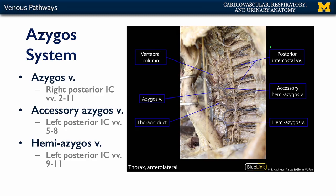Here we can see the cadaveric view. The aorta has been lifted up and retracted out of the way. We can see those posterior intercostal veins coming together — these ones are coalescing for the accessory hemi-azygous vein that drains into the azygous. And these others are draining into the hemi-azygous vein, which then also drains into the azygous as well.